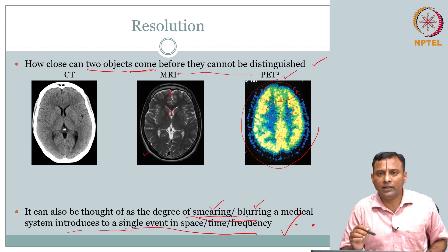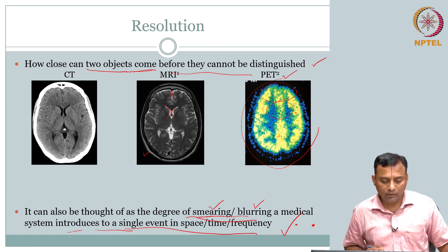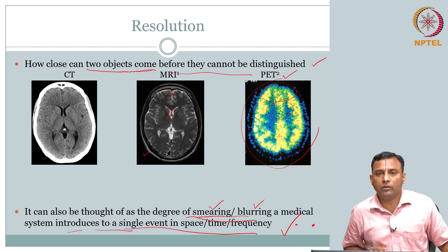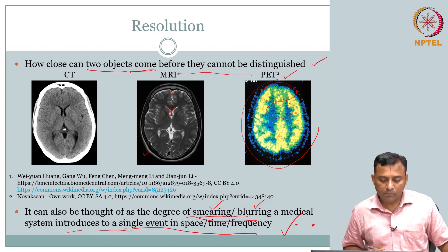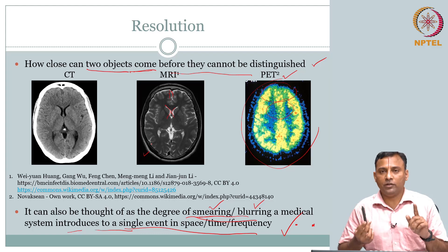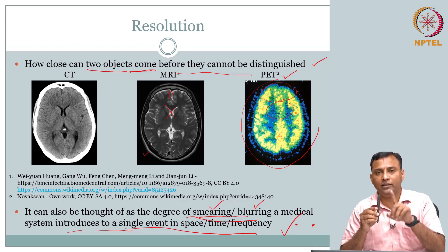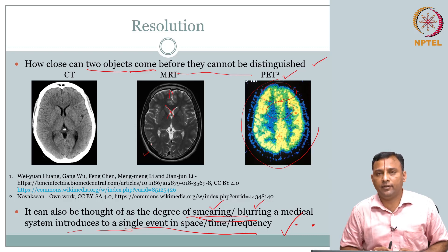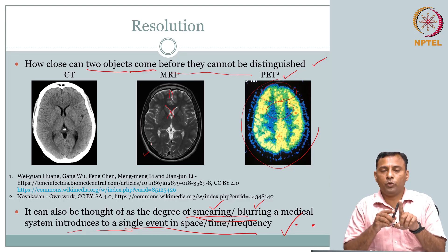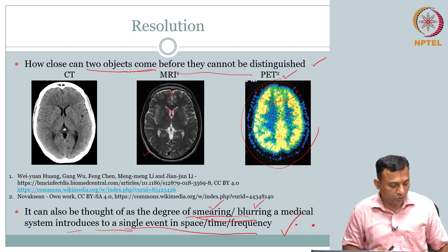I keep reiterating this because resolution also affects contrast — that is why we are using the same image. Now: we appreciate intuitively what resolution is, but can we capture it? The easiest way is brute force — have a ground truth, make sure you have two objects, bring them as close as possible, and each time take the imaging system's output and see at which point it ceases to be seen as two objects.